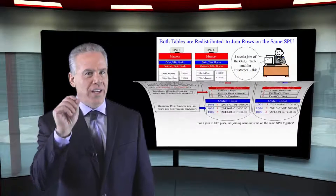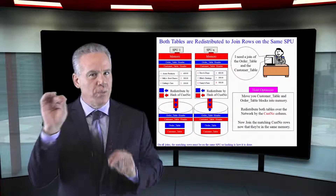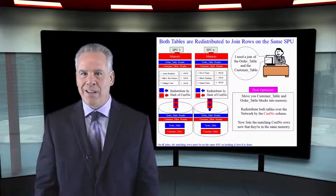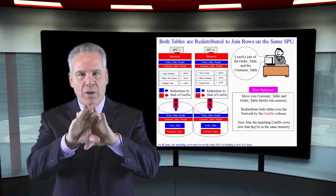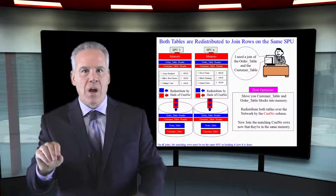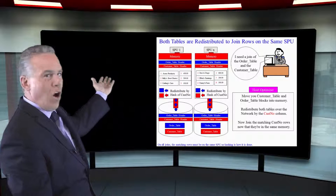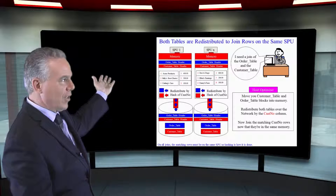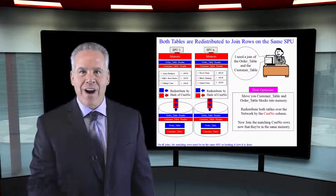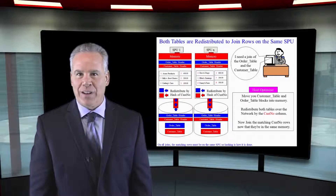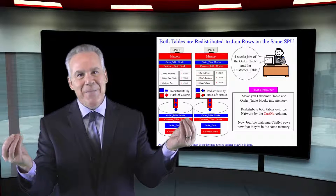Now you can see here exactly what happened in memory. These were two tables that were distributed on random and we joined on Cusno and Cusno. When the Teesa redistributed the customer table and then redistributed the order table on Cusno, they went to the proper AMPs. All the matching rows of customer number equals customer number are perfectly together on the proper spools for the life of this query. That's how co-location works — they got to get to the same place to get married.